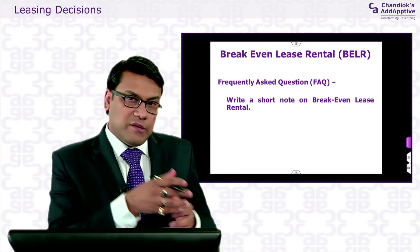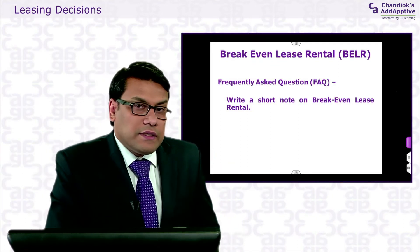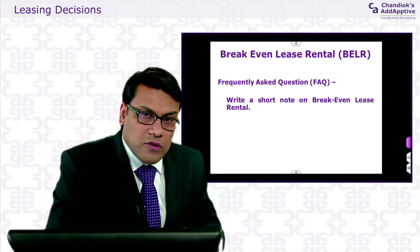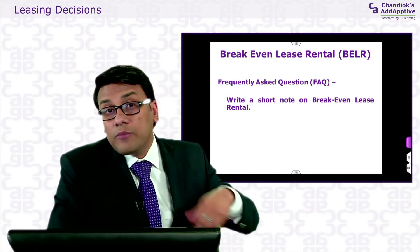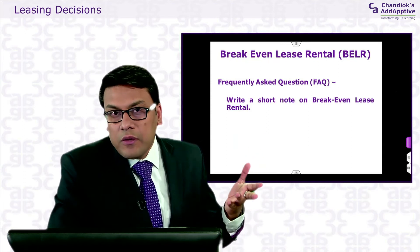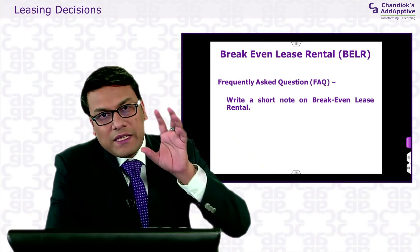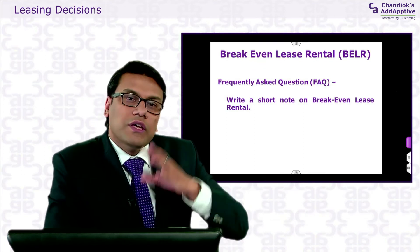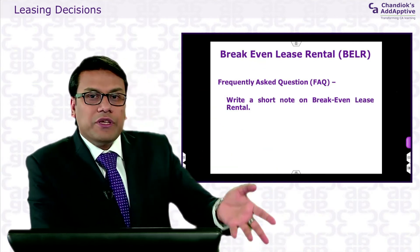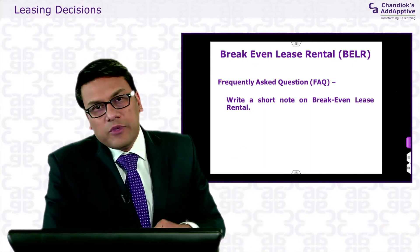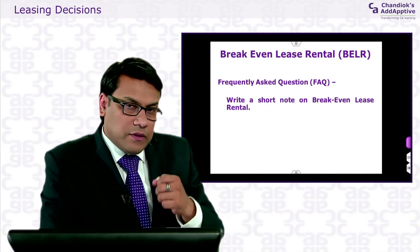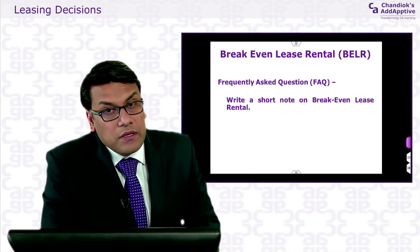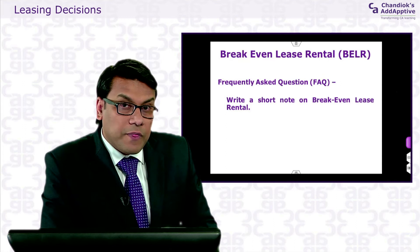In the previous example, we saw that based on his required rate of return the lessor was okay with 30,000 of rental, but he could have gone up to charging 32,000 rental. This is because the lessee is indifferent between taking a purchase loan versus taking it on lease. So on that comparison, the lease rental could have been charged more, and if the lessor can see that happening, he can increase his lease rental accordingly.